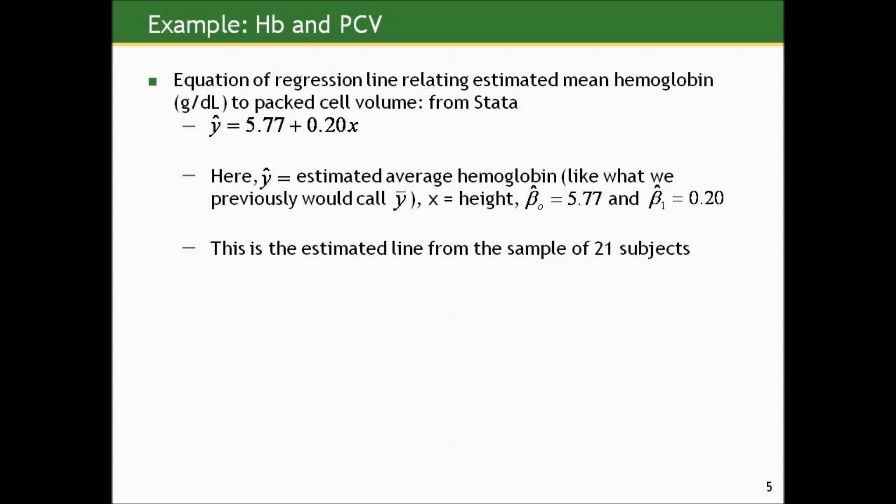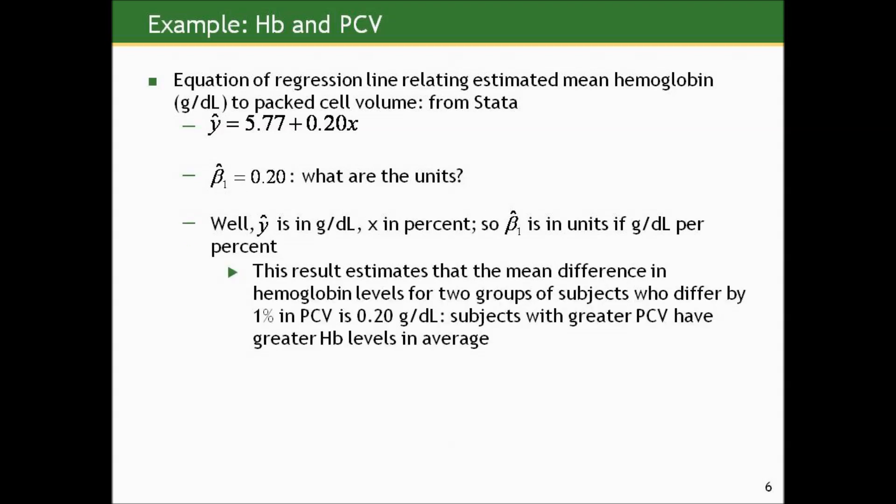Y-hat is the estimated average hemoglobin level. X is packed cell volume. The intercept is 5.77, and the estimated slope is 0.20. Before we interpret the slope, let's be clear on units. We plug in X in percent and multiply by 0.20 to get something in grams per deciliter, so beta-1 must be in units of grams per deciliter per percent. The results estimate that the mean difference in hemoglobin levels for two groups differing by 1% in packed cell volume is 0.2 grams per deciliter.